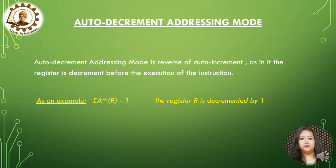Auto-decrement addressing mode is the reverse of auto-increment. In this mode, the register is decremented before the execution of the instruction. For example, EA = R minus 1, which means the register R is decremented by 1.